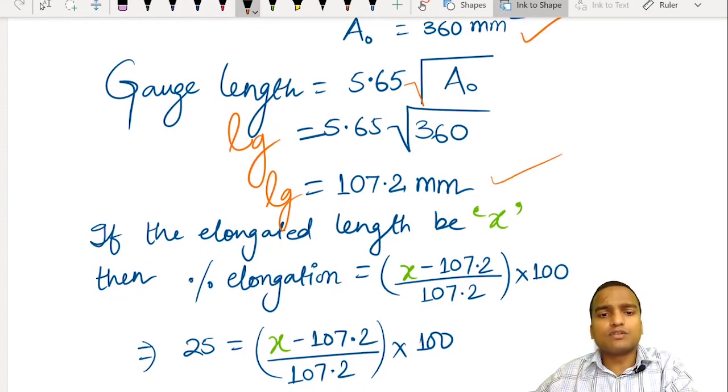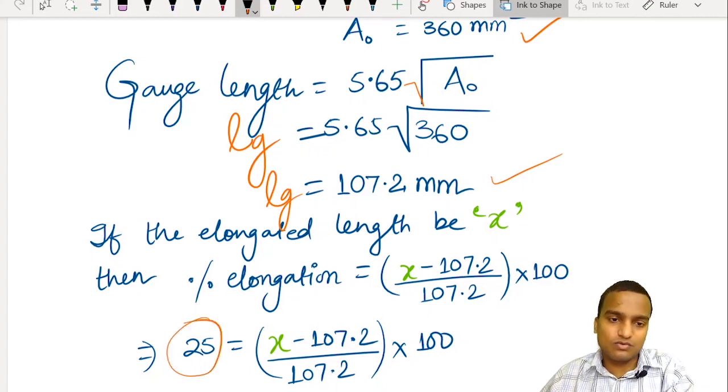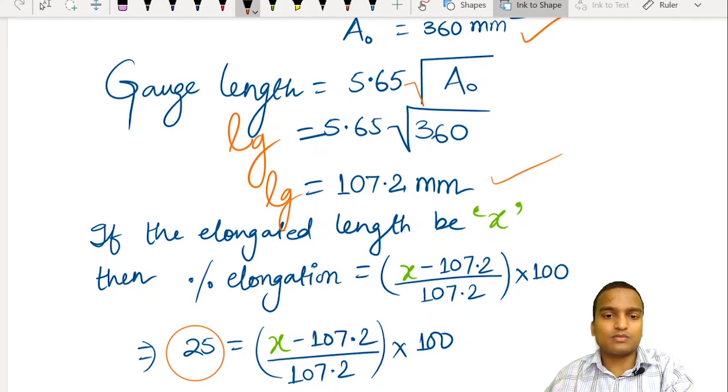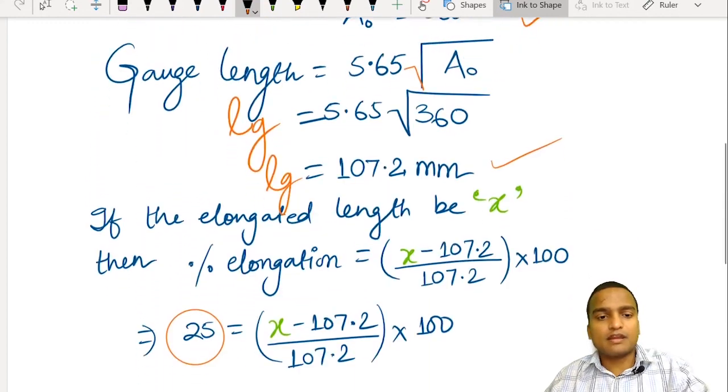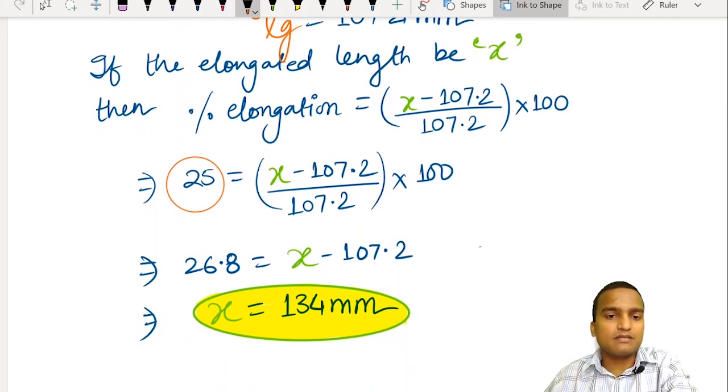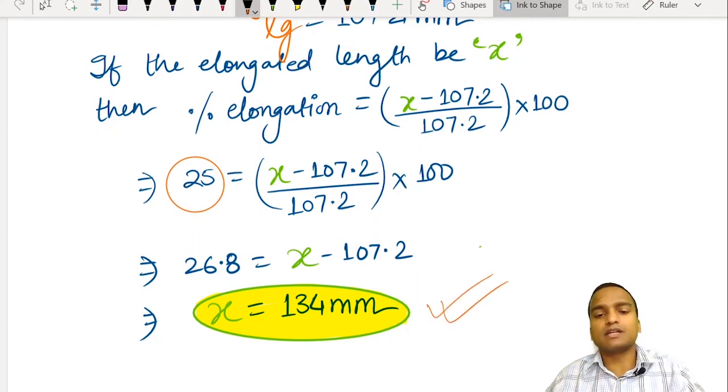Now, if we assume the elongated length of the specimen is x mm, then percentage elongation will be x minus 107.2 divided by 107.2 into 100. And percentage elongation is given to 25%. So we just use it directly. And after doing little cross multiplication, we arrive to the elongated length x is equal to 134 mm.